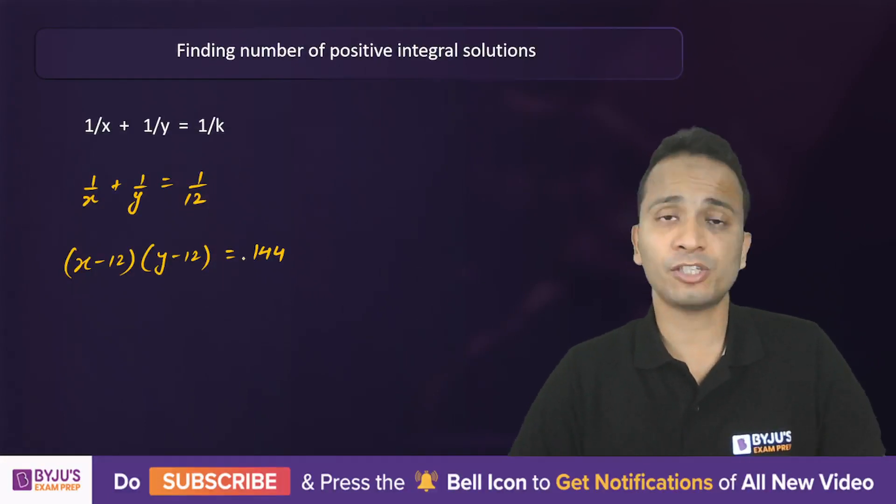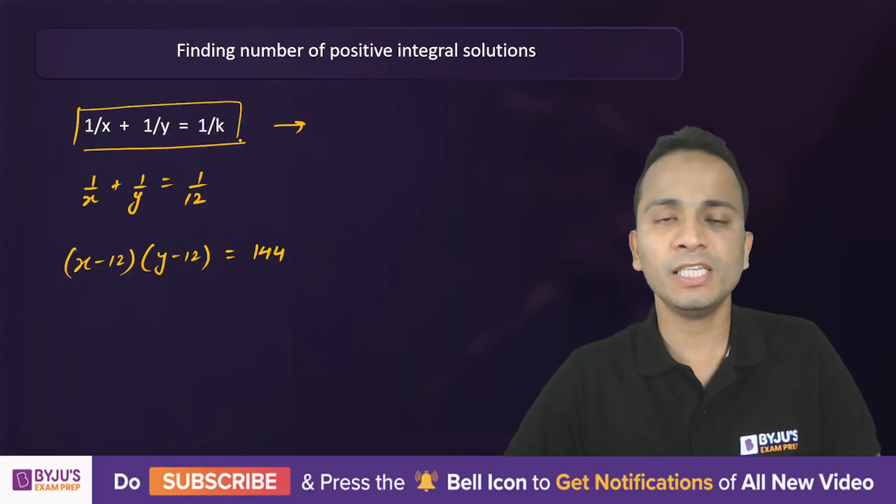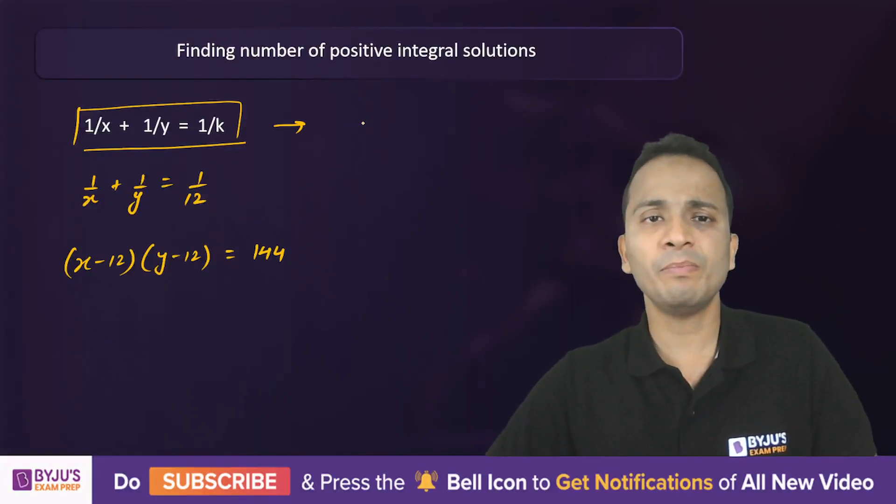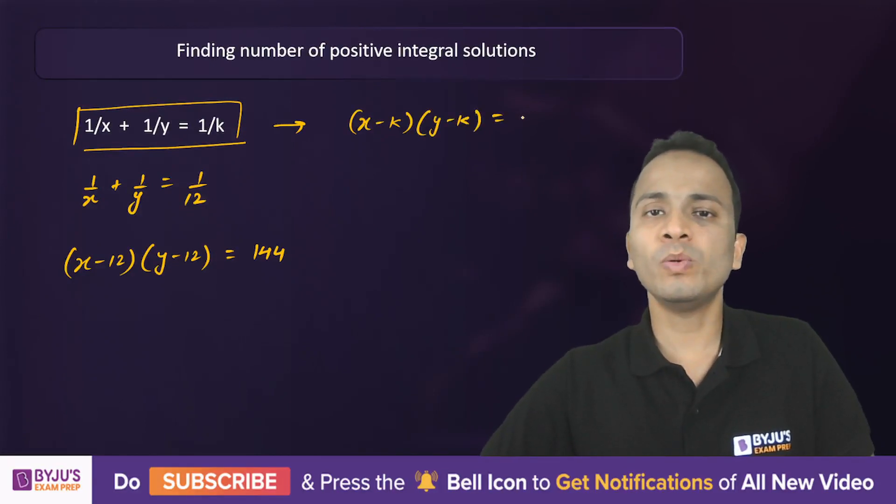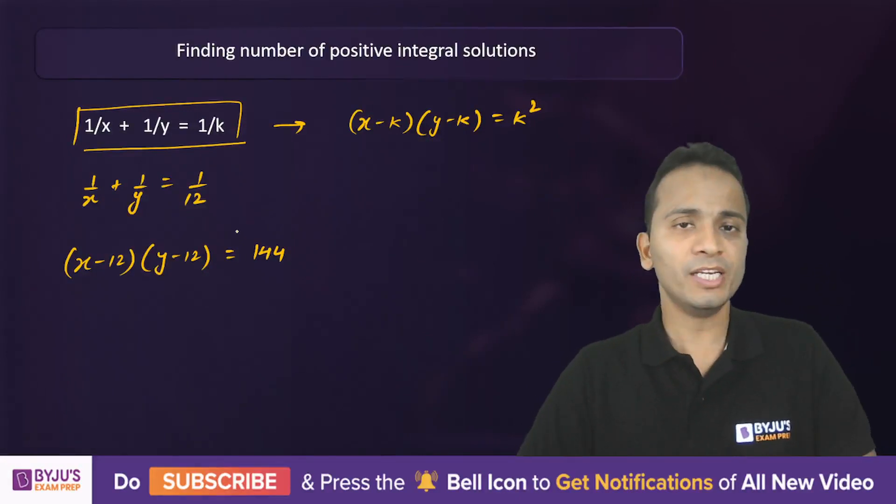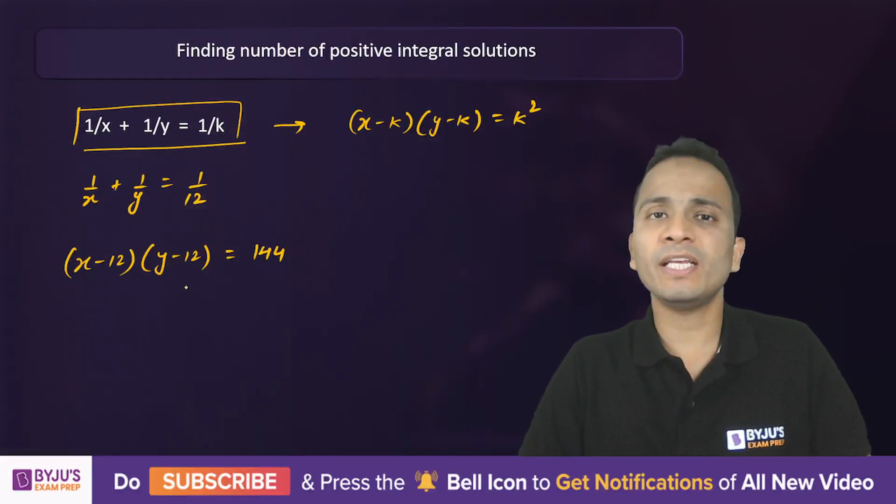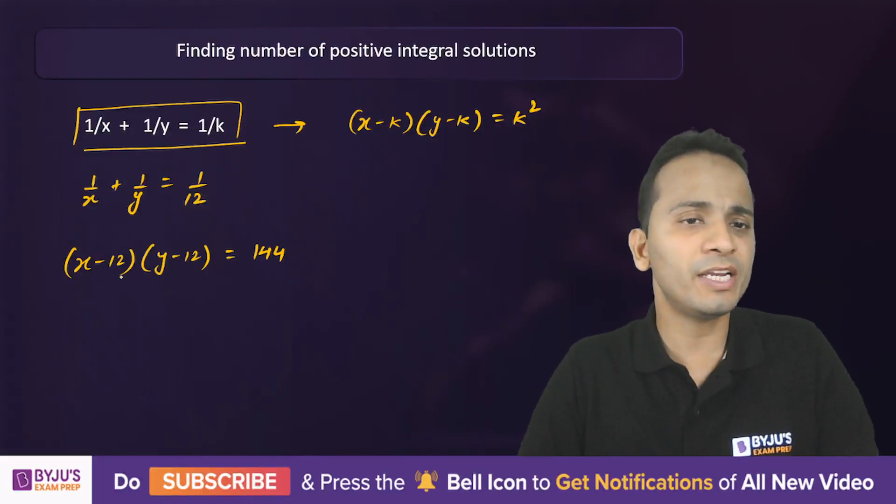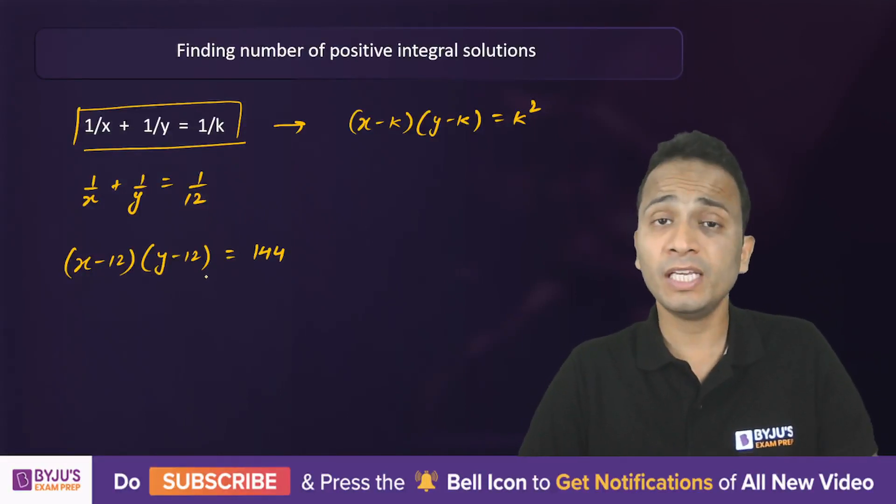If you have a general equation 1/x + 1/y = 1/k, then the factorized equation in general can be written as (x-k)(y-k) = k². This can always be done, so you can save time in writing the factorized form of this equation. I have written (x-12)(y-12) = 144.